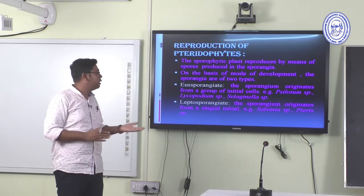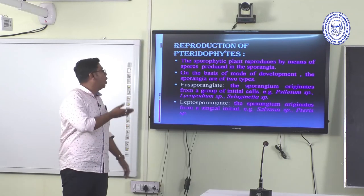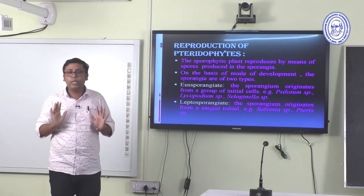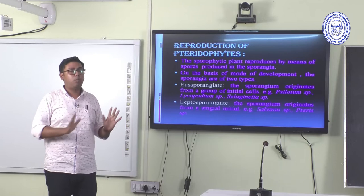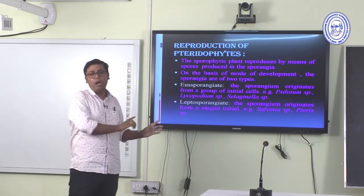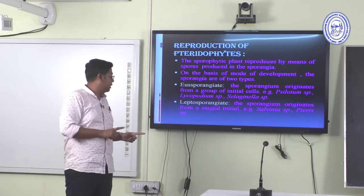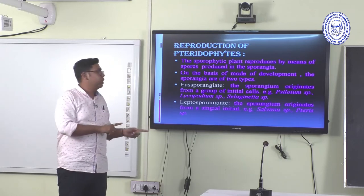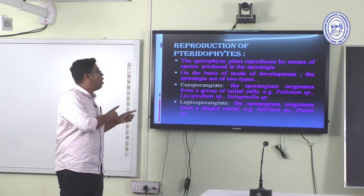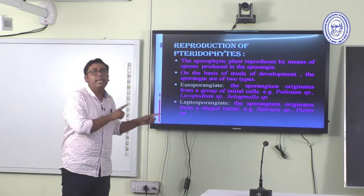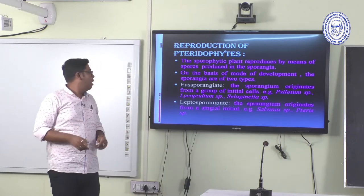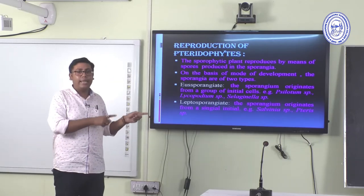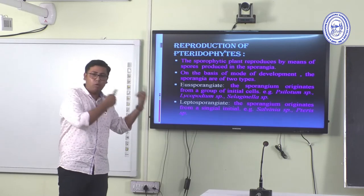In the eusporangiate type, the sporangia originate from a group of initial cells. In the leptosporangiate type, the sporangia originate from a single initial cell. Lycopodium and Selaginella are examples of eusporangiate Pteridophytes.